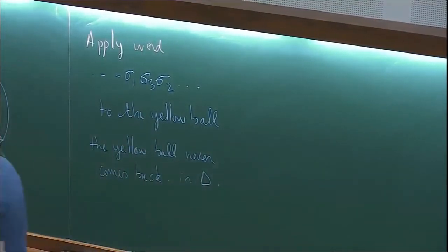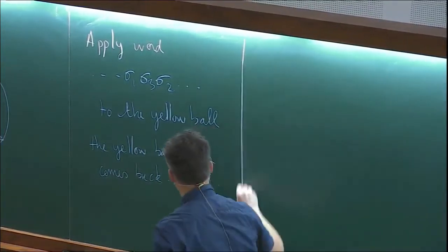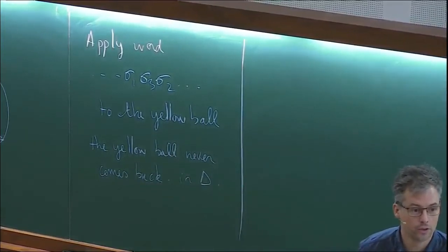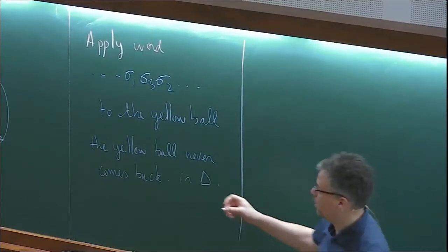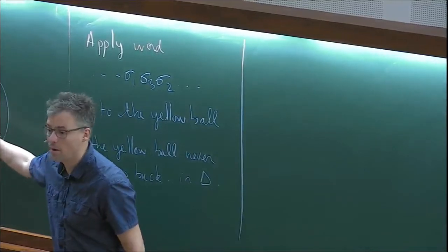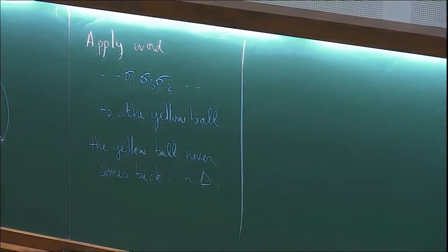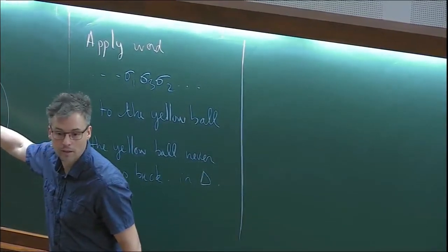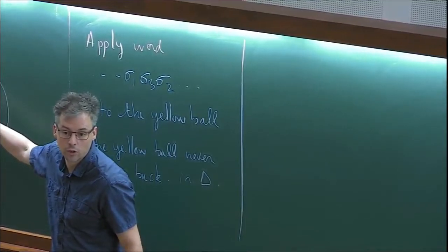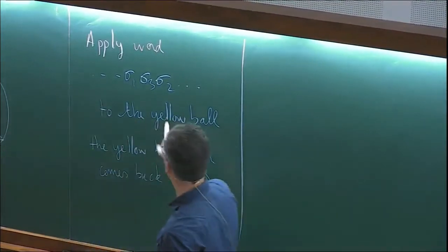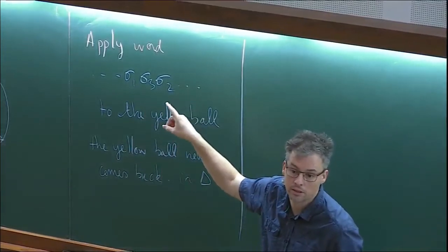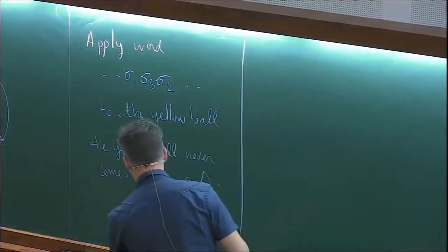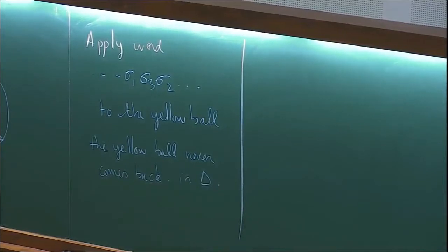Delta will be this triangle. More precisely, for all gamma in the group generated by sigma 1, sigma 2, sigma 3, gamma applied to delta never intersects delta. The yellow ball never comes back, meaning none of its points can be a fixed point of any element in the group. No element is elliptic, and so the group is discrete.